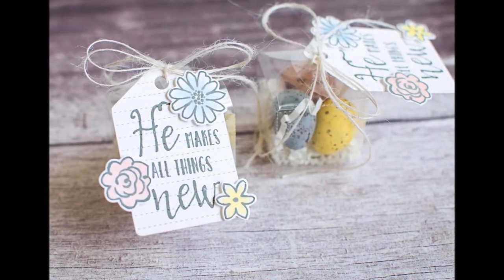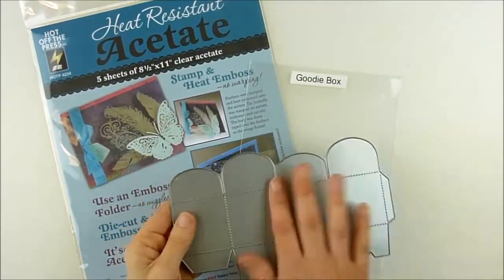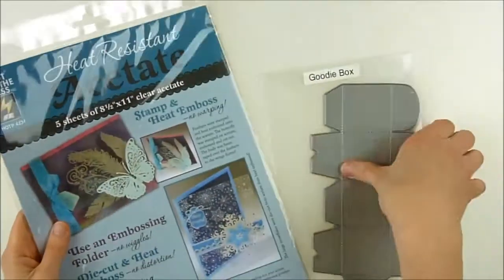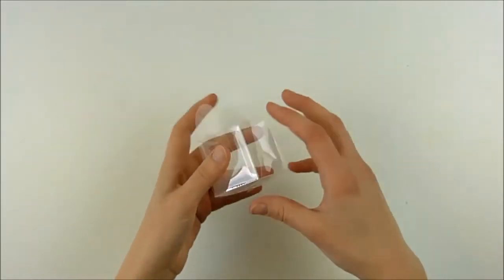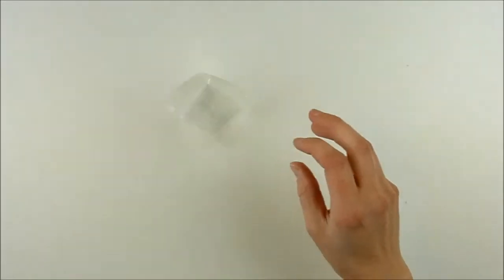Hello, this is Heather Hoffman, and I'm here to share some fun Easter treat packaging I made using Reverse Confetti's Goodie Box Confetti Cuts. I die cut them out of clear acetate. This is heat resistant. You don't need to do that unless you're planning on stamping and heat embossing—any acetate will work.